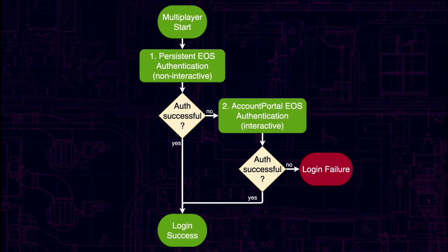The sequence of actions when using persistent log-in is as follows. After starting the multiplayer mode of a game, at first we try a so-called persistent EOS authentication. What happens there is that EOS checks whether it stored some previous authentication token that can be used to re-log in. If this fails, meaning that no such previous authentication is available, we initiate the account portal log-in as usual.